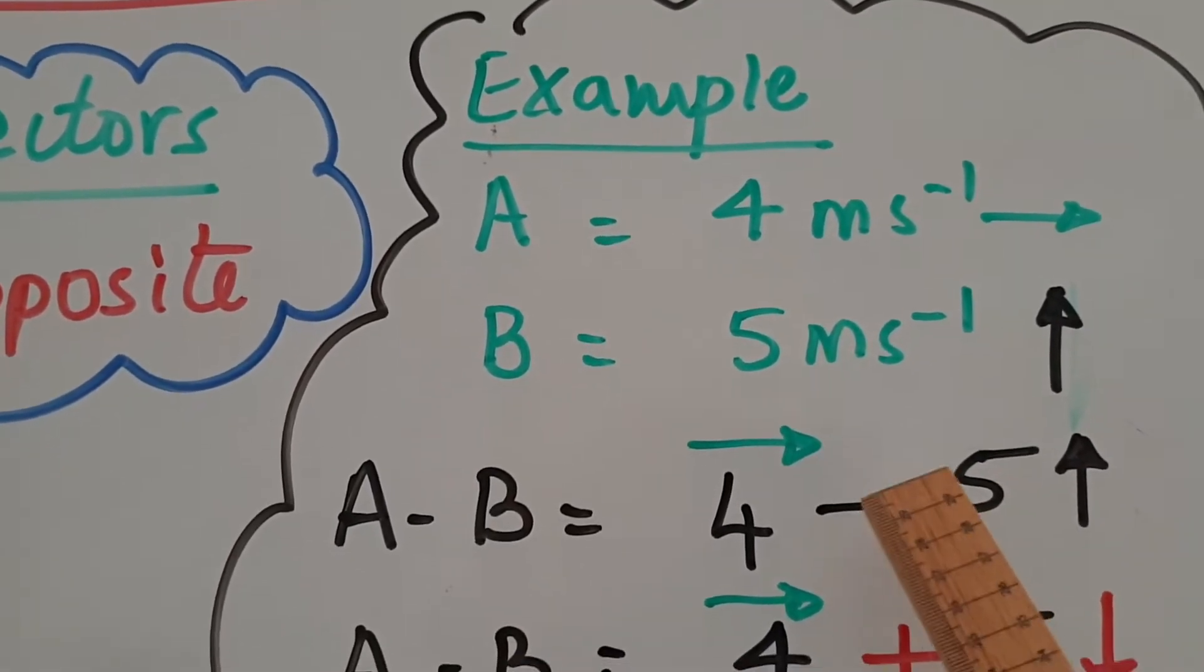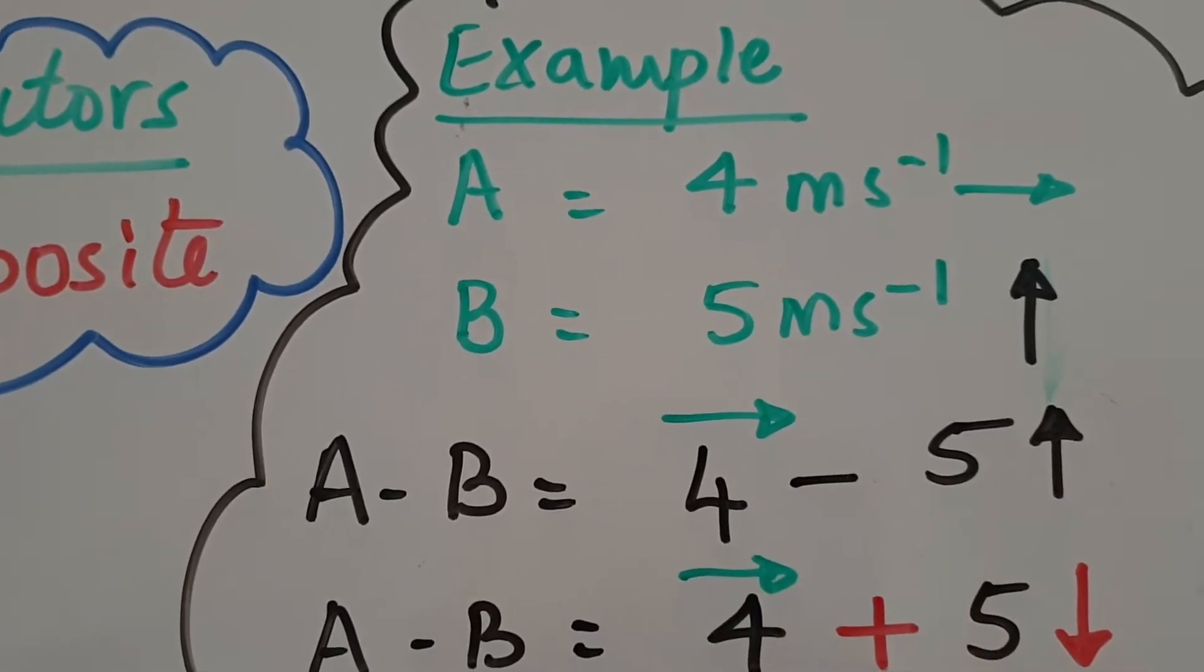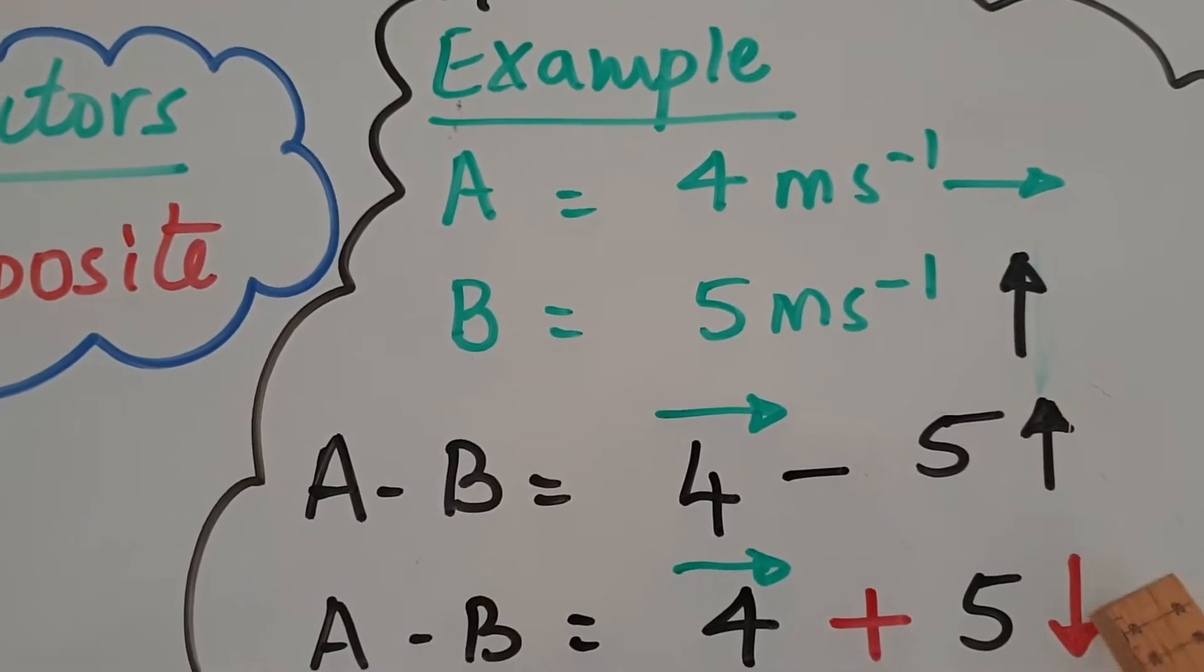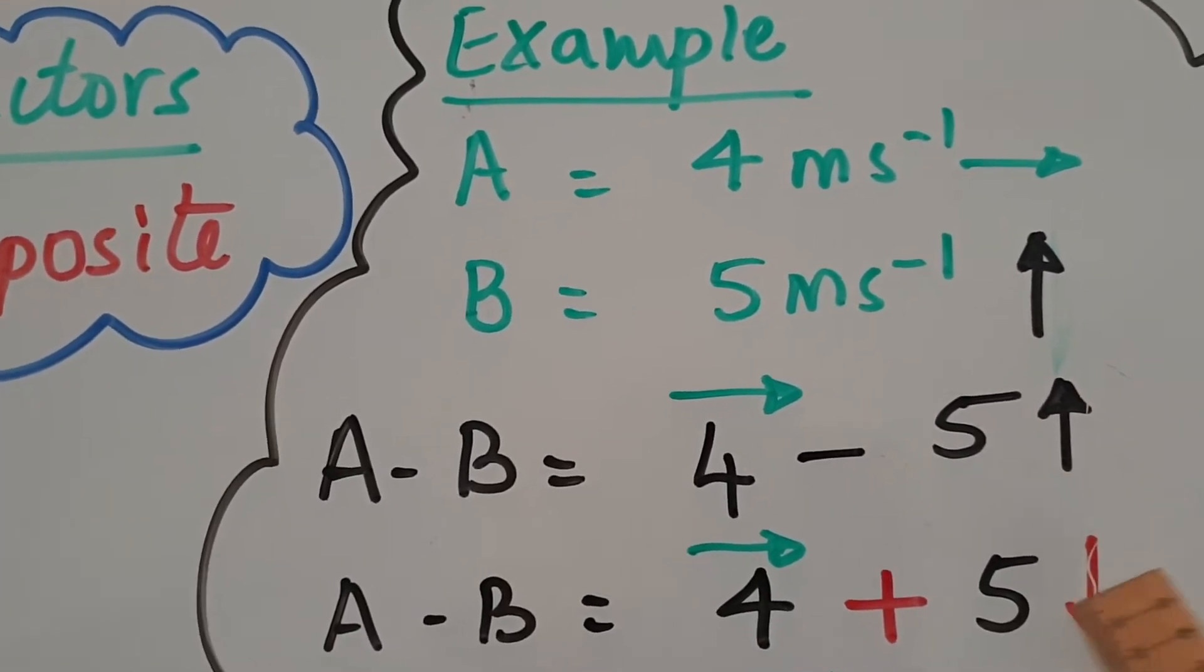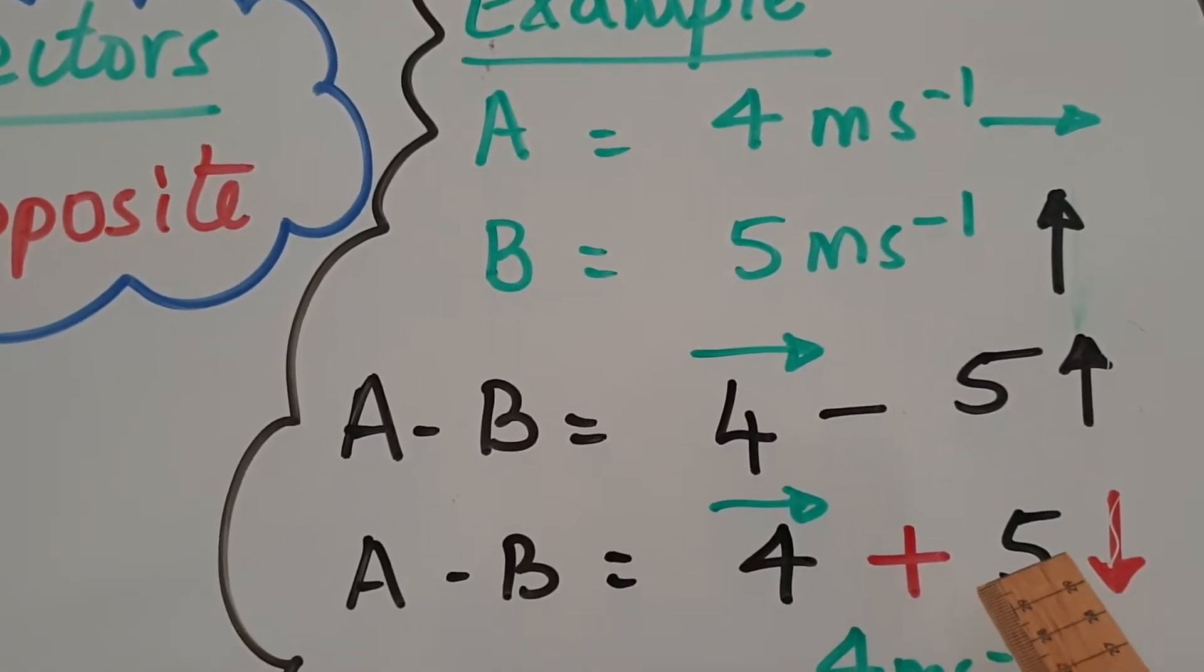So what do we do? We leave the first number as it is, no change. The minus sign now becomes a plus sign. The arrow pointing upwards, the opposite of upwards is downwards, so it points down. Now we just do vector addition using the rules that we learned in the last lesson.